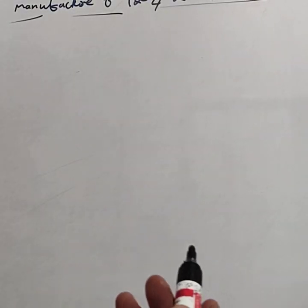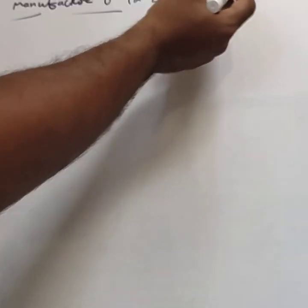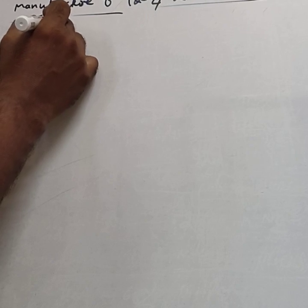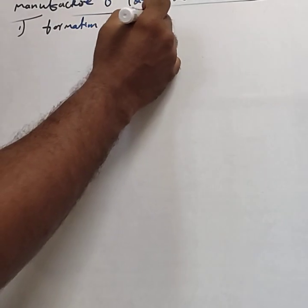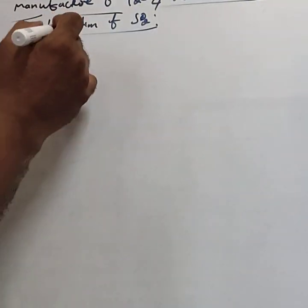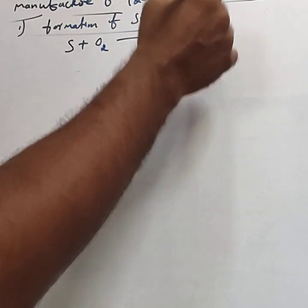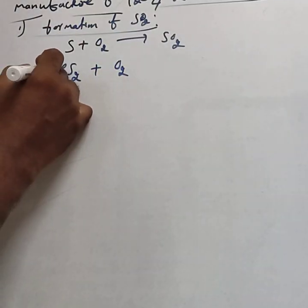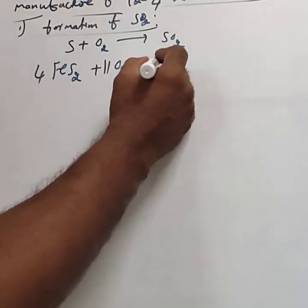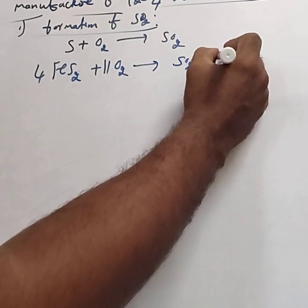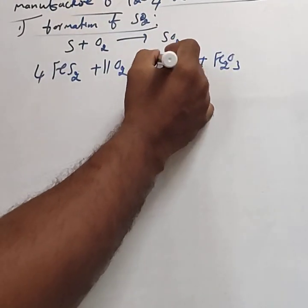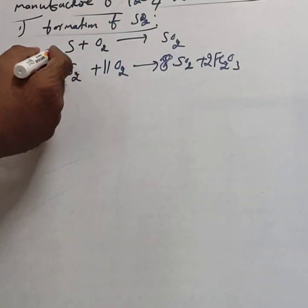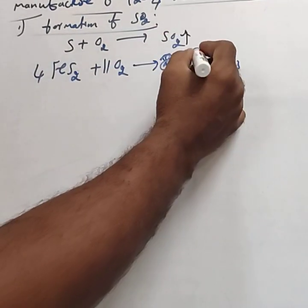Next, consider the third preparation: manufacture of sulfuric acid by contact process. In this contact process, the first step is formation of sulfur dioxide. Sulfur dioxide is produced by burning sulfur in air: S + O₂ → SO₂. Or by roasting iron pyrite: 4FeS₂ + 11O₂ → 8SO₂ + 2Fe₂O₃.